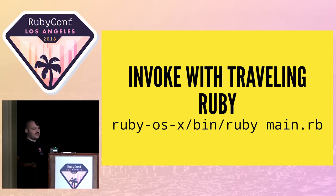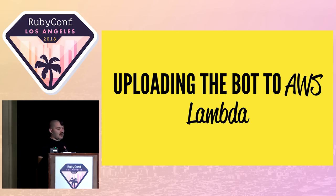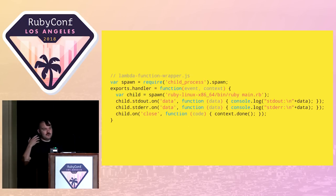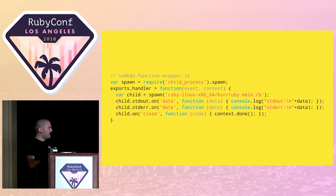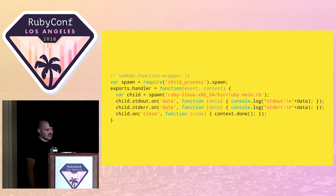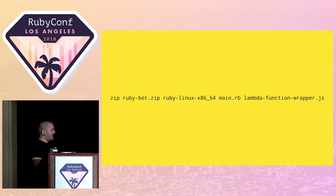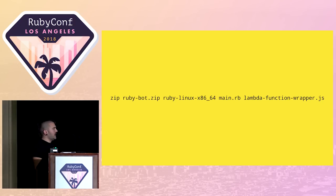That's not all you need to do to upload the bot to AWS Lambda. Since Lambda unfortunately doesn't accept direct shell commands, you need to create a JavaScript wrapper to execute it. What it basically does is spawn a child process executing that shell command. Then you need to zip everything up — the runtime, the source code (main.rb), and the JavaScript wrapper — and upload it to AWS Lambda.